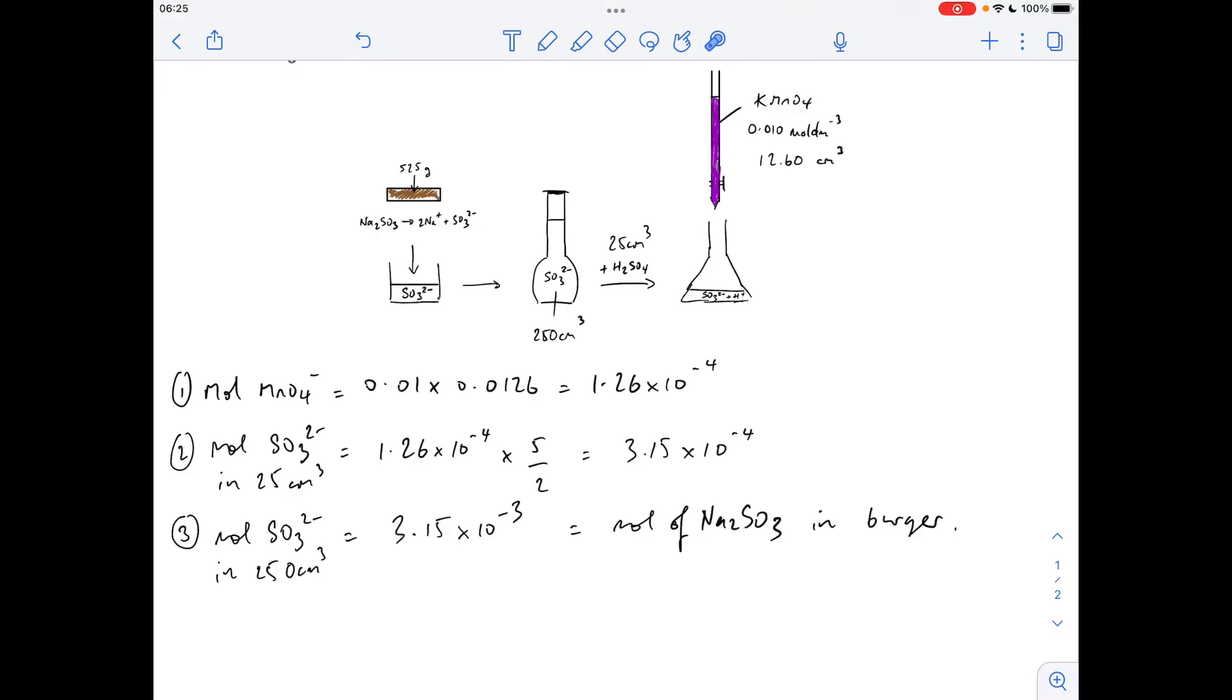Now just remember where these sulphite ions came from. They came from the extraction of the sulphite ion from the sodium sulphite from the burger. So what we're after is the moles of sodium sulphite. Remember, they're the same as the moles of sulphite ions. So we also know the moles of sodium sulphite in the burger.